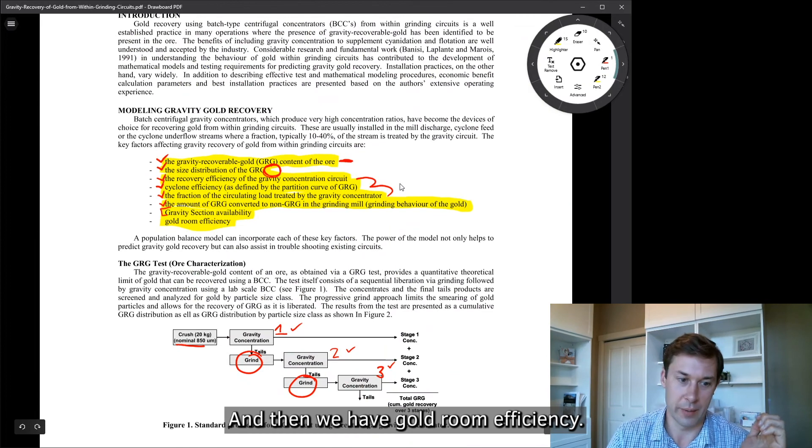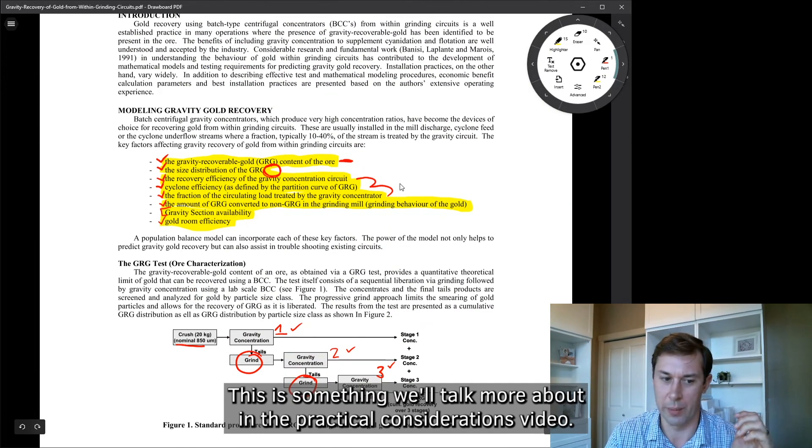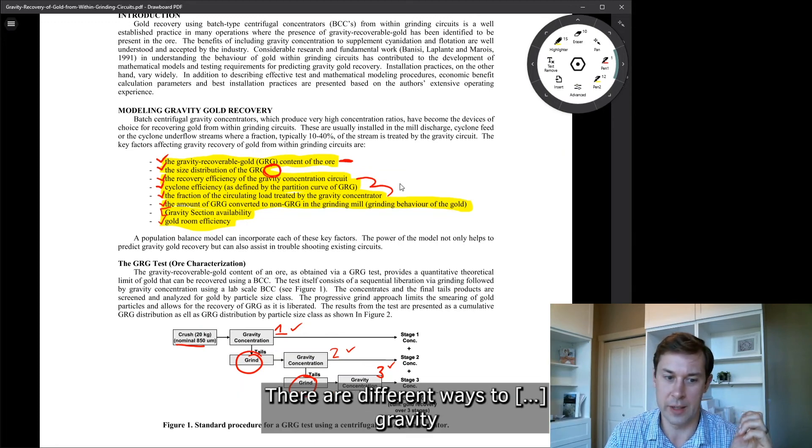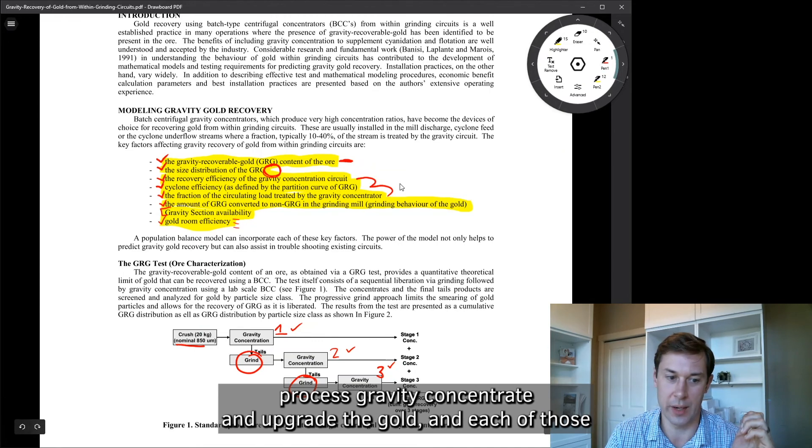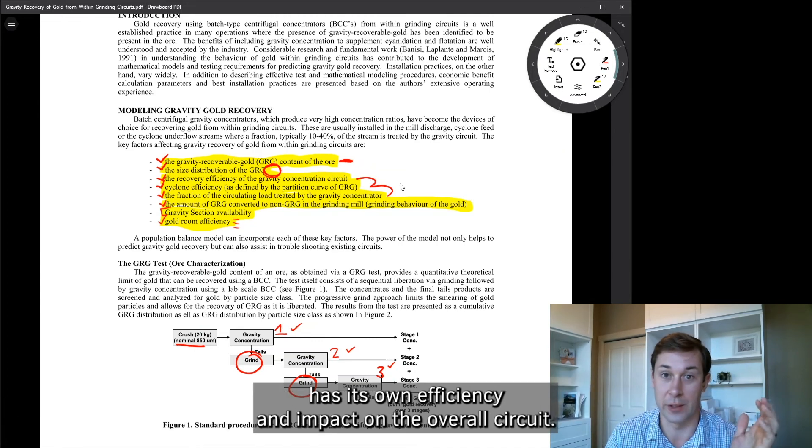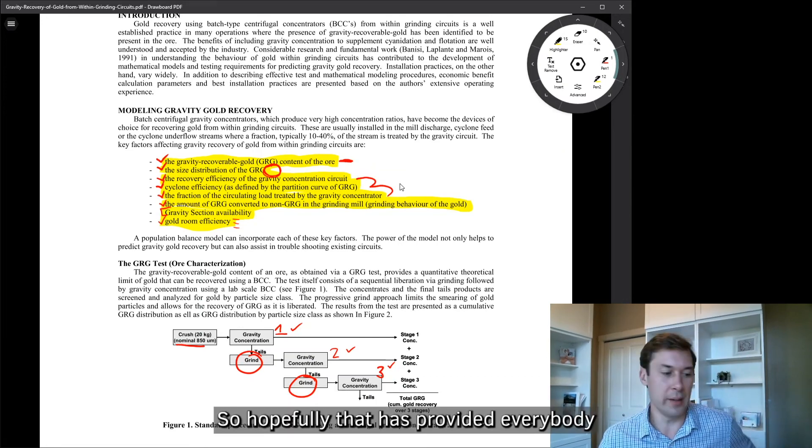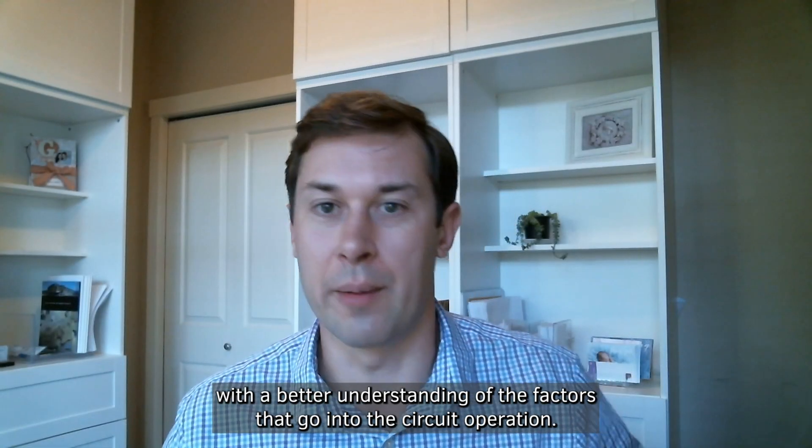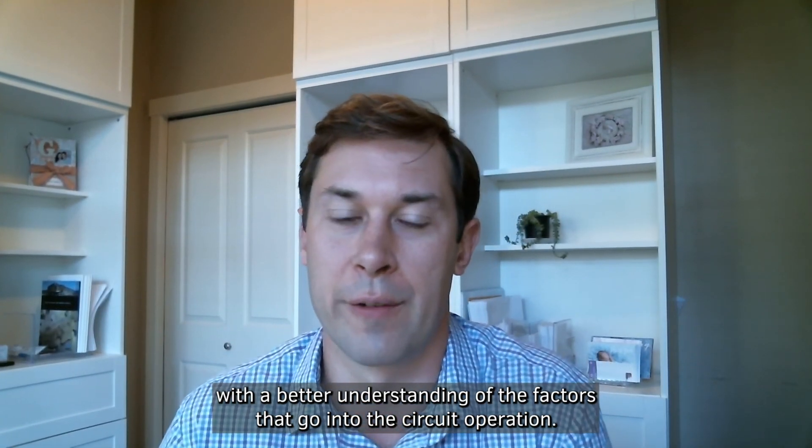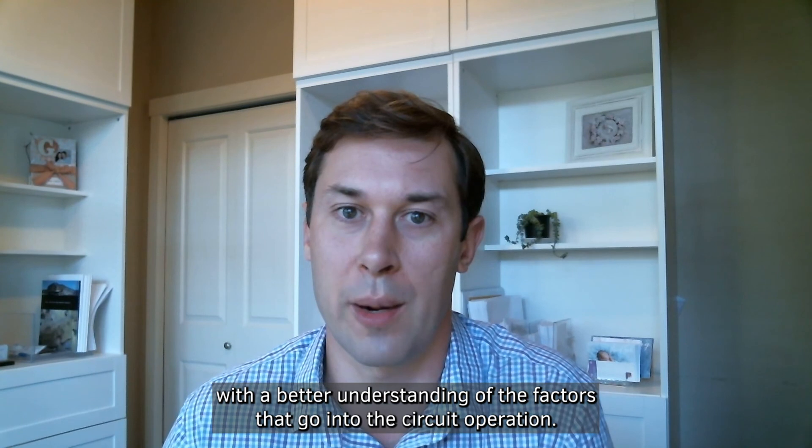And then we have gold room efficiency. This is something we'll talk more about in the practical considerations video. There are different ways to recover gravity or to process gravity concentrate and upgrade the gold. And each of those has its own efficiency and impact on the overall circuit.